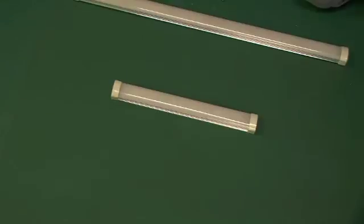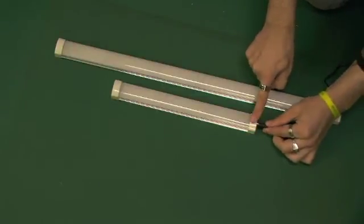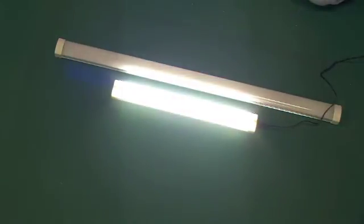So what we'll demonstrate now is a larger extrusion in both the 300 and 600 mil, these units are basic on off functionality and use double row strip which makes them significantly brighter.